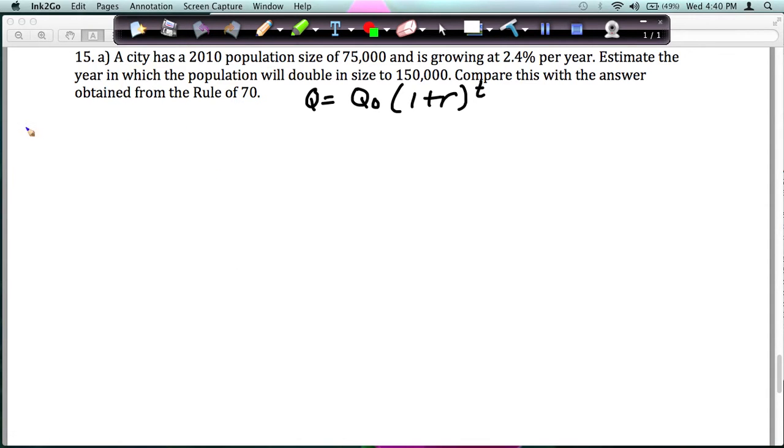We know our initial population is 75,000. We know our ending population is 150,000. We know our growth rate is 2.4%, which as a decimal is 0.024. And time is what we're solving for.